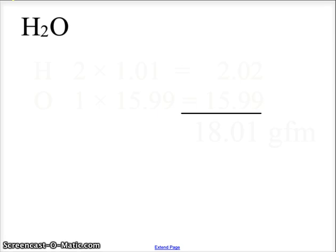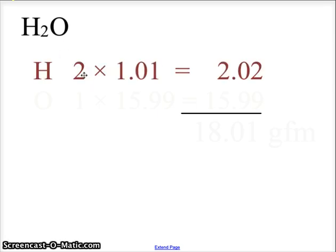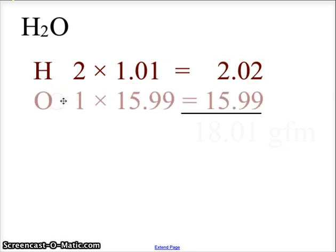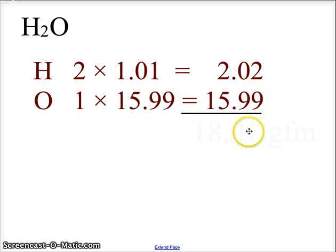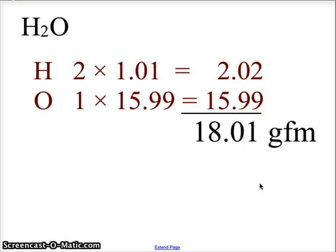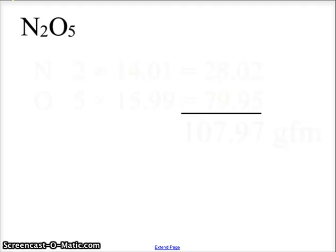For water H2O, hydrogen has two atoms at 1.01, giving a value of 2.02. Oxygen has one atom at 15.99. Adding those together, we get a gram formula mass of 18.01 grams per mole for the molar mass.